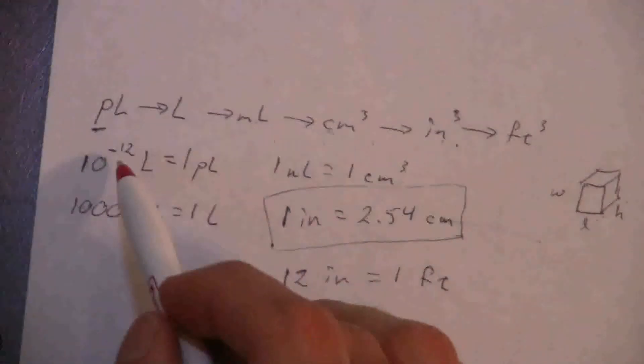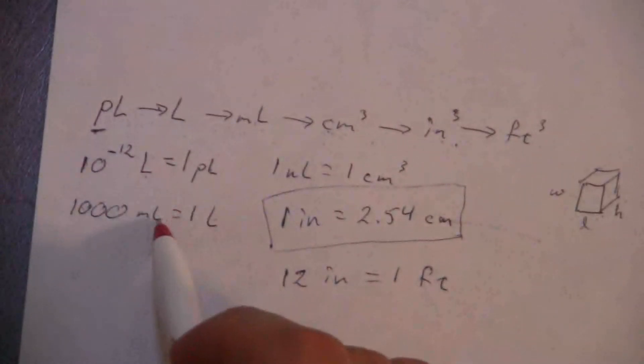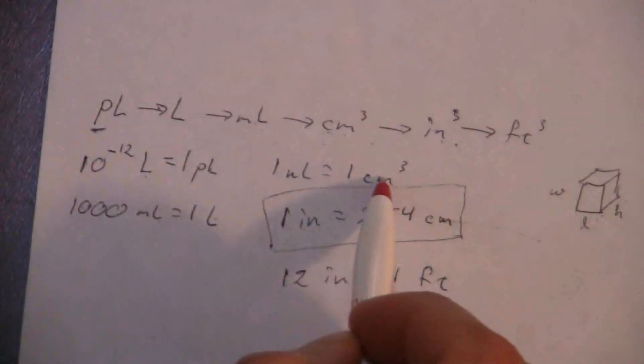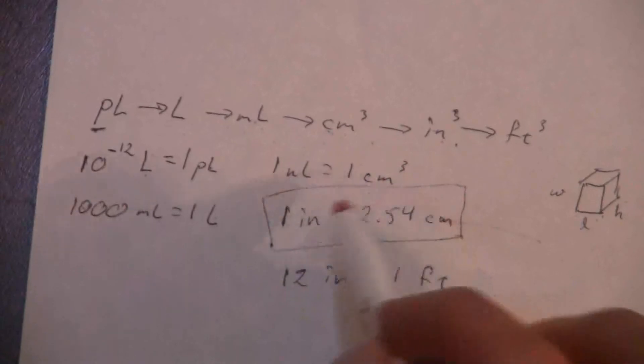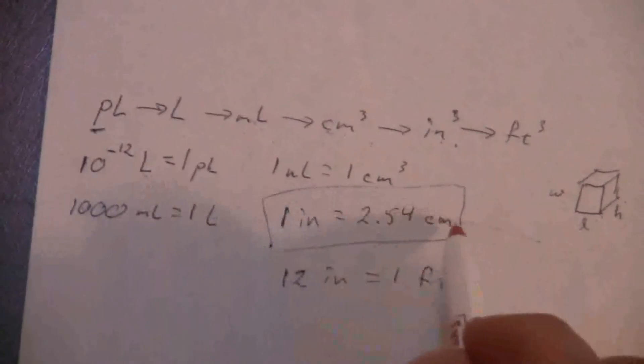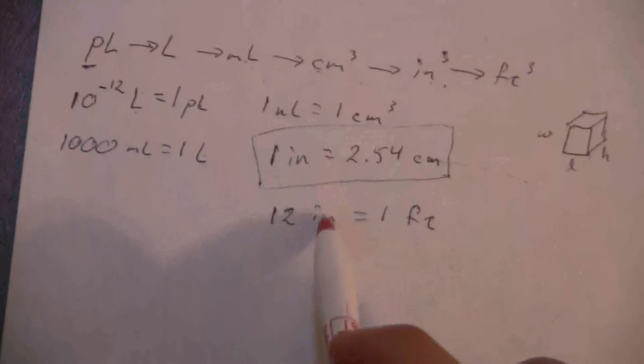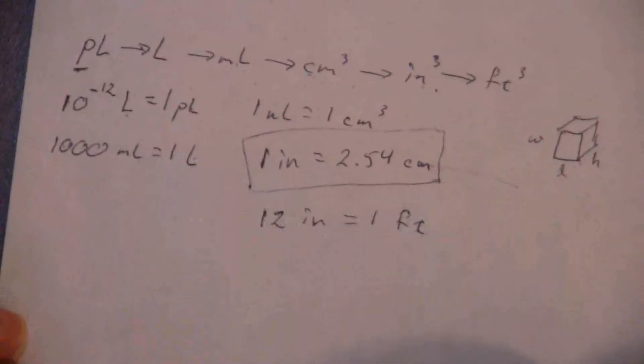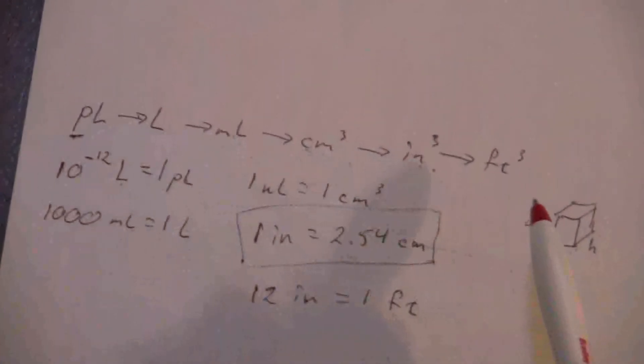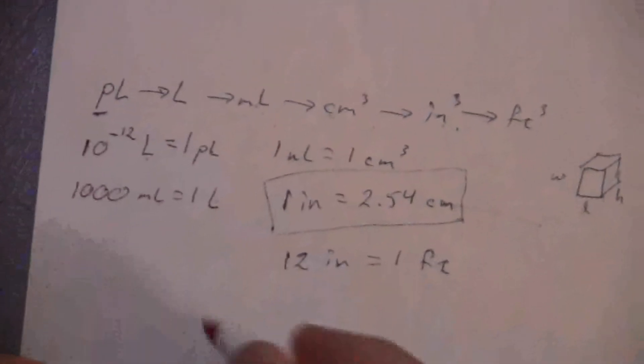So here are all of our conversion factors, going from picoliters to liters, from liters to milliliters, from milliliters to cubic centimeters, and then we're going to use these to get from centimeters to inches, and we're just going to have to cube that to keep that cubic part of it in there. And then the inches and the feet also will be cubed. So there you have it. It's longer, but it's really not that much more complicated. You're doing the same steps, you're just doing them more.